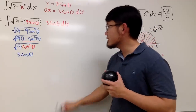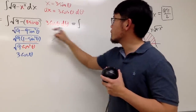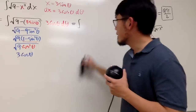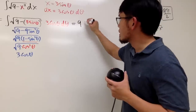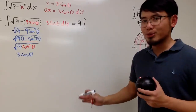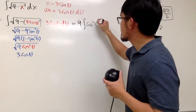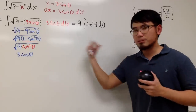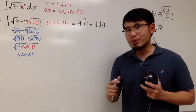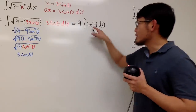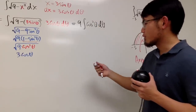We have 3 times 3 which is 9, so we take the 9 outside. Inside we have cosine squared θ dθ. Now we just have to integrate cosine squared θ, and to do so we use the power reduction formula to go from cosine to the second power to cosine to the first power.